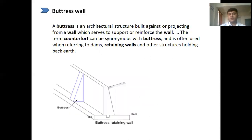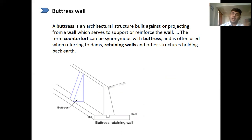The last type is the buttress wall. The buttress wall is almost the same as the counterfort wall. The difference is that in the case of the counterfort wall, we provide counterforts on the inside — the backfill side — but in the case of the buttress wall, we provide the supports on the opposite side of the wall, i.e., the front face.